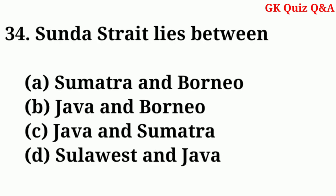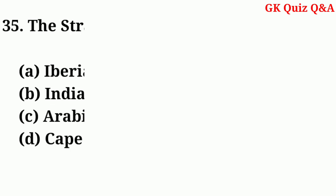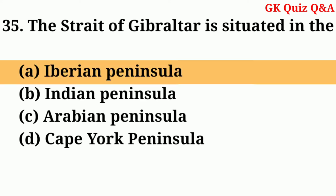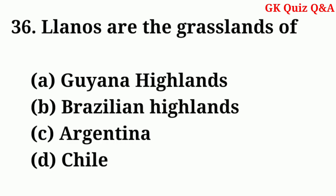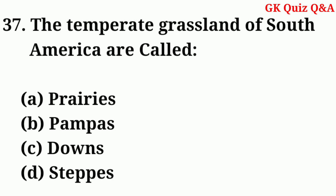Great Barrier Reef of Australia is located parallel to? Answer: A — East Coast. The Sunda Strait lies between? Answer: C — Java and Sumatra. The Strait of Gibraltar is situated in the? Answer: A — Iberian Peninsula.